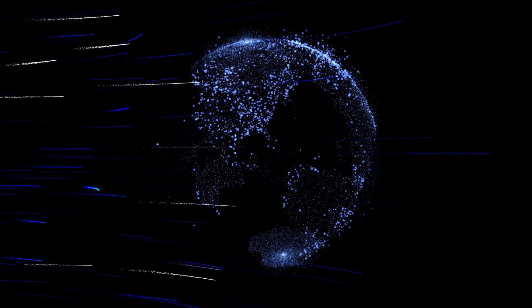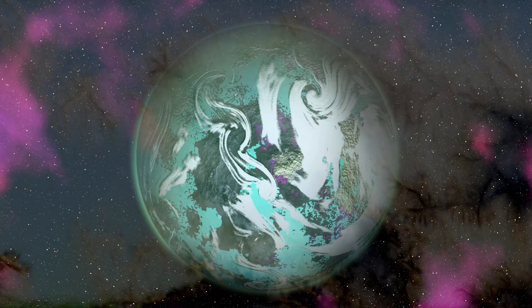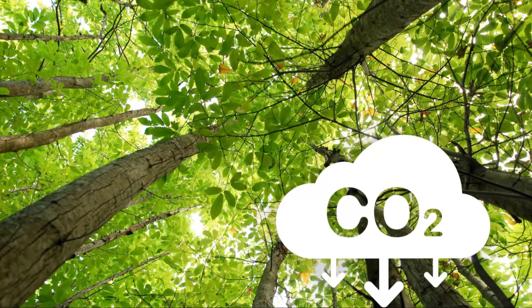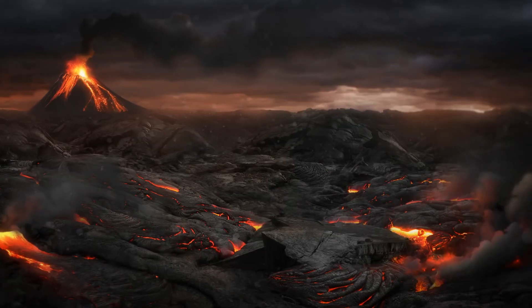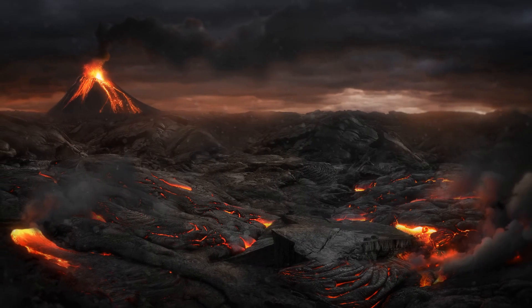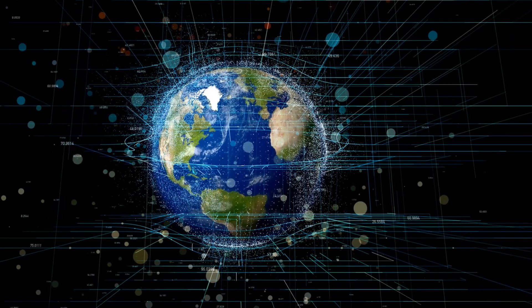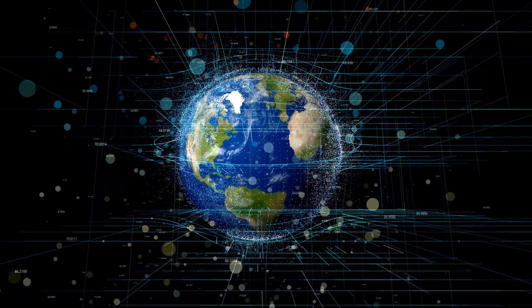Consider the constant flow of energy and matter across the planet. The oceans, teeming with life, regulate temperature and drive weather patterns. Forests act as the planet's lungs, absorbing carbon dioxide and releasing oxygen. Volcanoes, while destructive, play a crucial role in replenishing the Earth's crust and atmosphere. These interconnected systems, working in harmony, suggest an entity far greater than the sum of its parts.